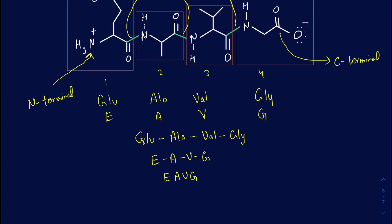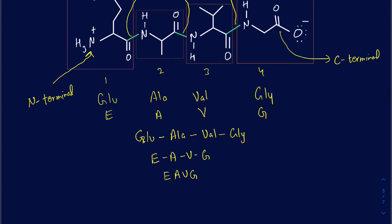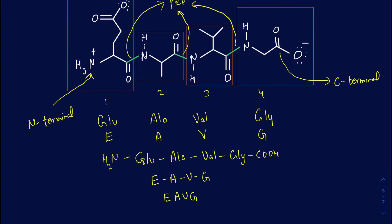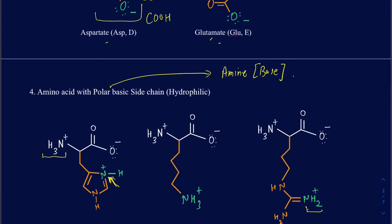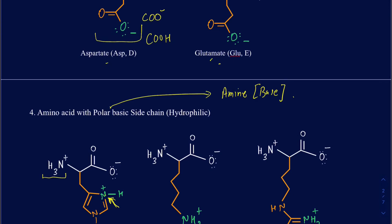If they give you a sequence, sometimes they specify that the left side is the N-terminal and the right side is the C-terminal. Sometimes they may write NH2 on the left side and COOH on the right side, meaning the right side is the C-terminal and the left side is the N-terminal. This is the general presentation of a peptide — be able to recognize your N-terminal, C-terminal, and peptide bond, and the 20 different types of amino acids classified based on the sidechains, whether being polar, nonpolar, basic, or acidic.